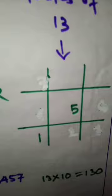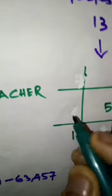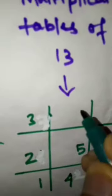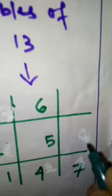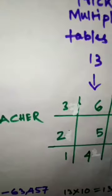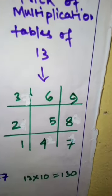Now for the tables of 13, we will write like this. 1 here, then 2, here we will write 3, here we will write 4, here 5, 6, and here 7, 8 and 9. Now what we will do, these are called rows. The horizontal or the sleeping lines are called rows and the standing lines are called columns or vertical lines.